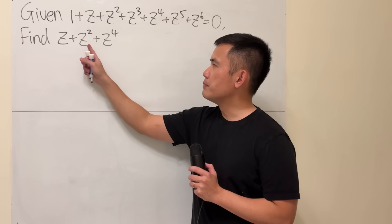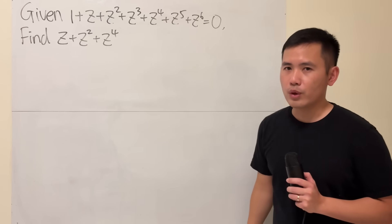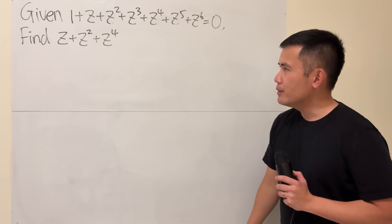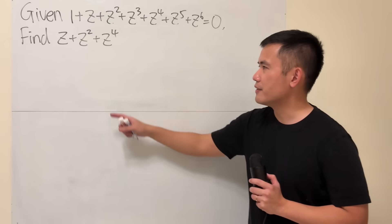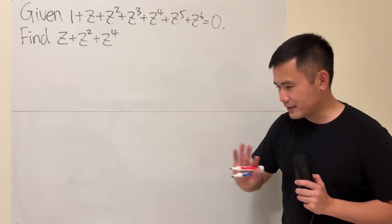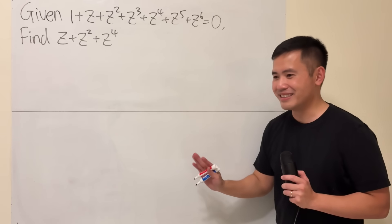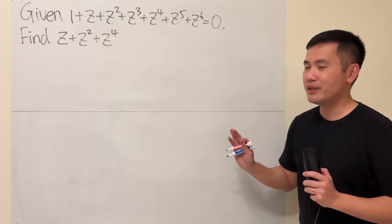Our goal is to find z plus z squared plus z to the fourth power. If you want to solve for z from this given equation and then plug in the value and compute this expression, let's not do that. Seriously, it would be pretty hard, I would say.